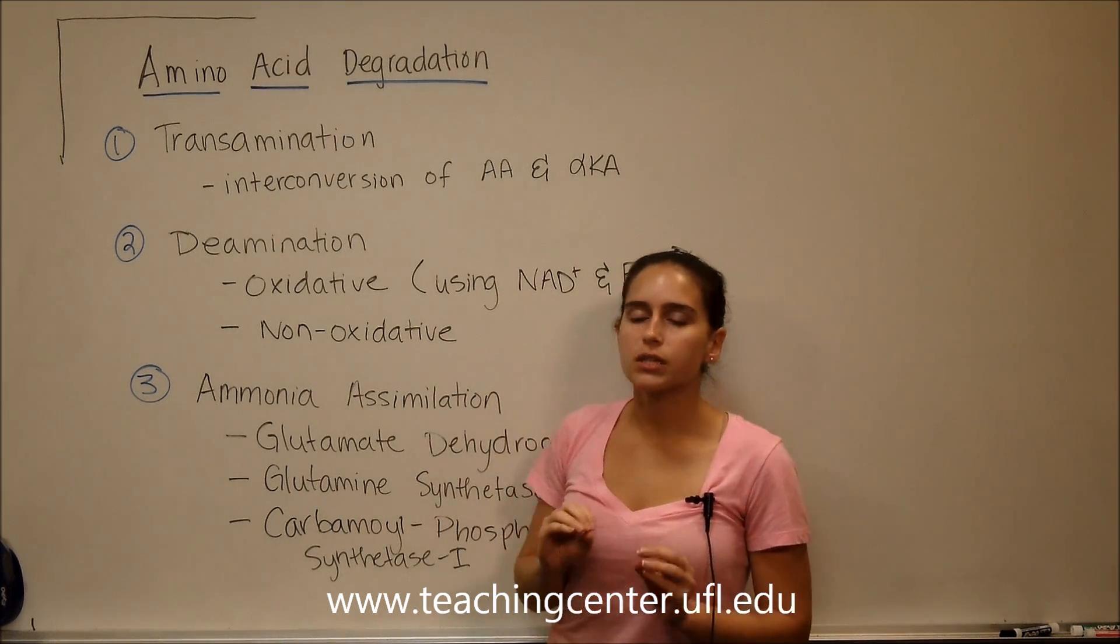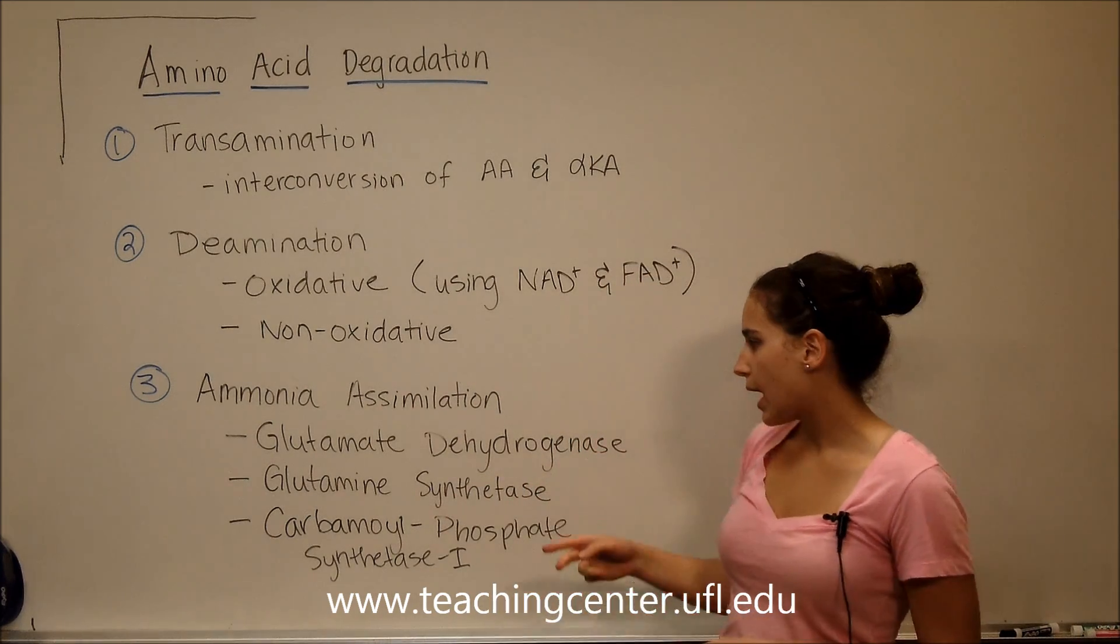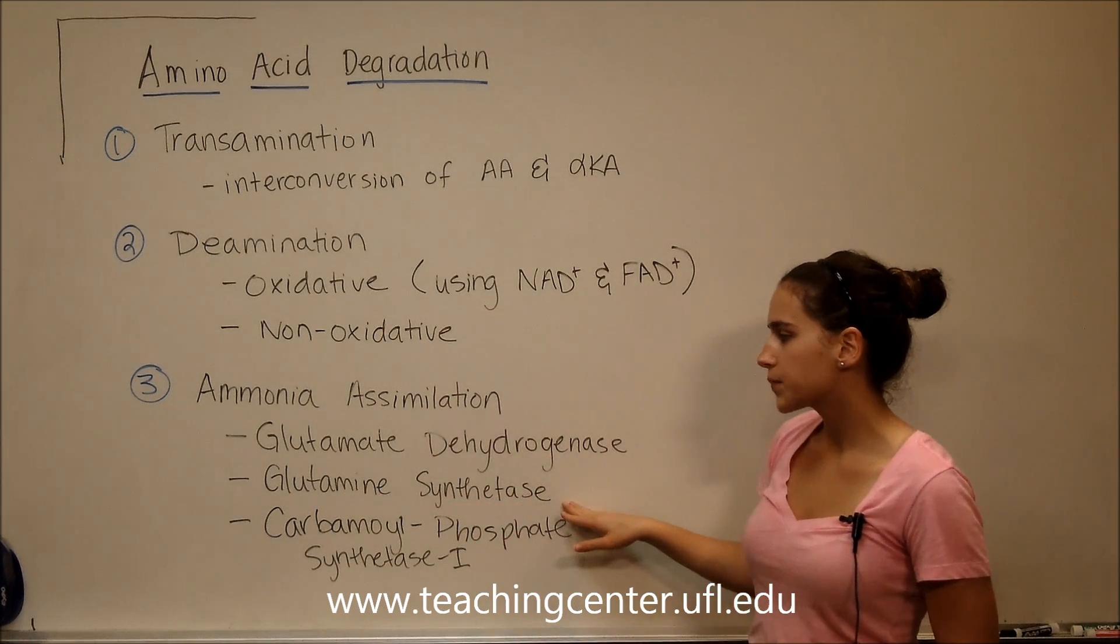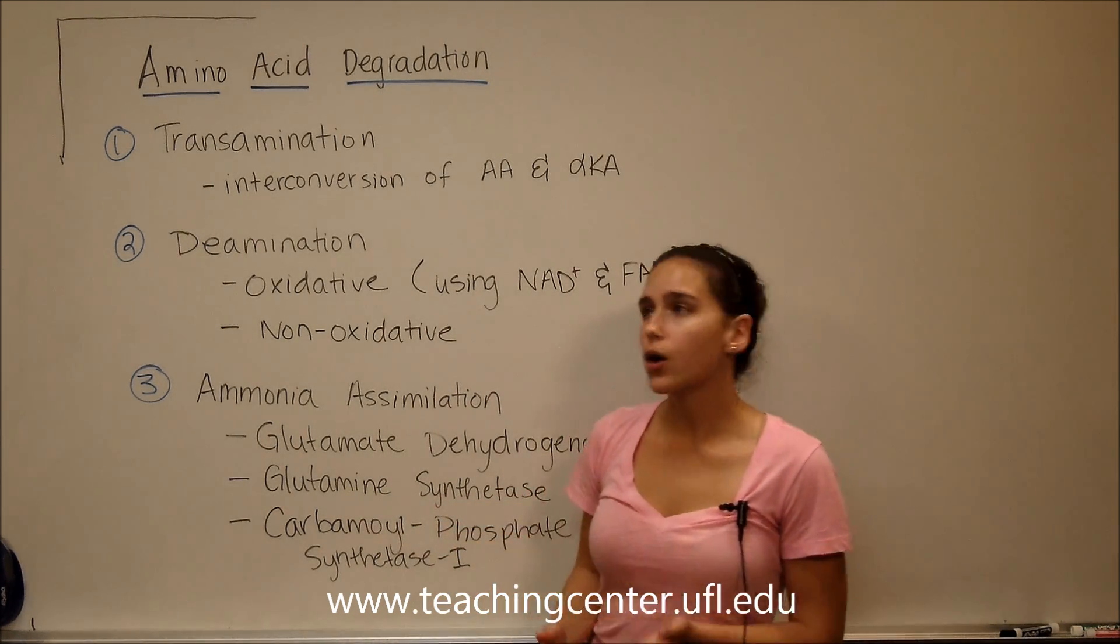And then ammonia assimilation, which just simply means putting ammonia into another molecule. This is going to be done by different enzymes: glutamate dehydrogenase, glutamine synthetase, and carbamoyl phosphate synthetase I. We're going to be talking about all of these in detail.